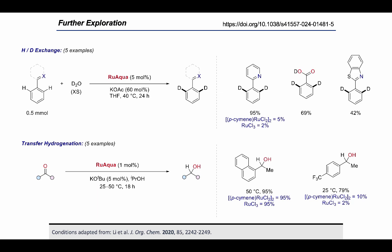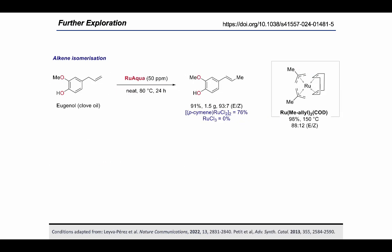We continued to expand the scope of reactions that RuAqua could perform and began looking at this alkene isomerization shown here. The previous gold standard catalyst for this was the ruthenium allyl complex shown here on the right, which was reported in Nature Communications a few years ago and was specifically designed for this purpose. Not only were we able to match the low catalyst loading of just 50 parts per million, we were also able to significantly reduce the reaction temperature from 150 degrees to 80 degrees while keeping that yield high.